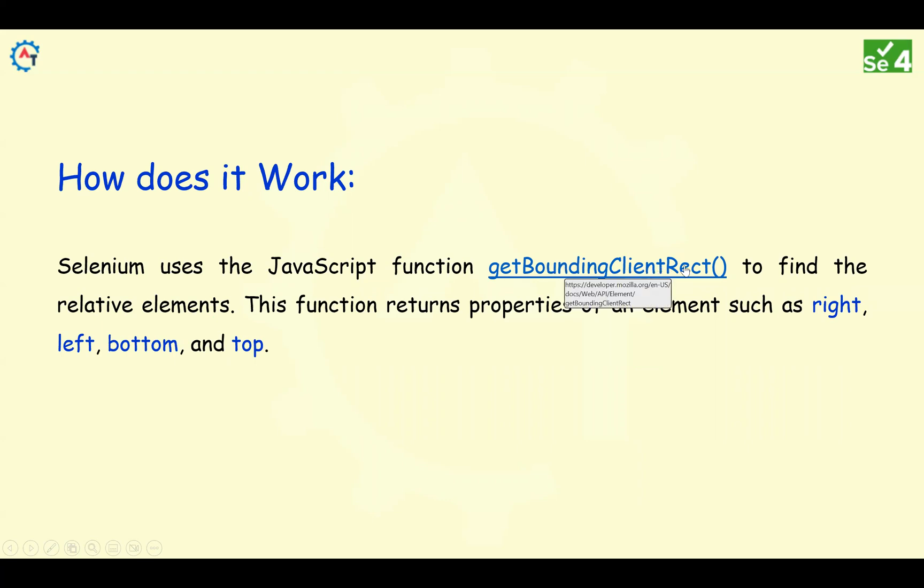getBoundingClientRect() is used to find the relative elements. This function returns properties of an element such as right, left, bottom, and top. With the help of those properties, we can find our elements.